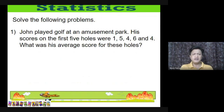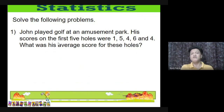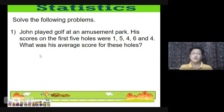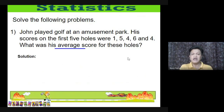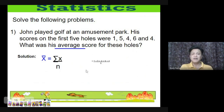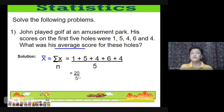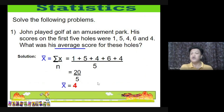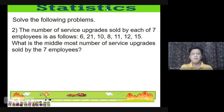Now let's apply these to real-life problems. Problem 1: John played golf at an amusement park. His scores on the first five holes were 1, 5, 4, 6, and 4. What was his average score? The word 'average' means mean. Add all scores: 1+5+4+6+4 = 20, divided by 5. The mean is 4. That is John's average golf score.